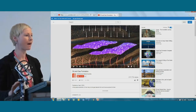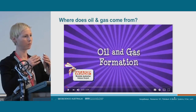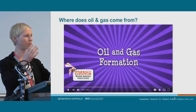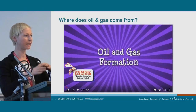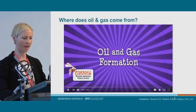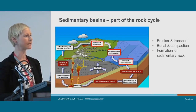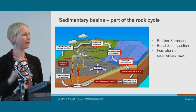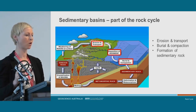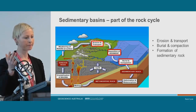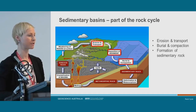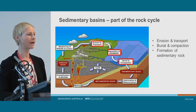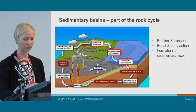Oil and gas form by the process of organic matter falling and sediment accumulating in sedimentary basins. In geology 101 they talked about the rock cycle — here we have the erosion and transport via rivers, the deposition of sediment in sedimentary basins, and it's buried and compacted until it forms a sedimentary rock.